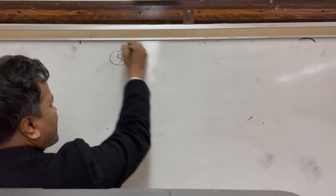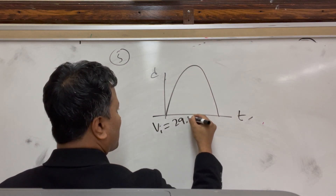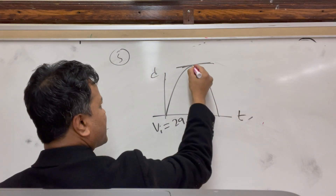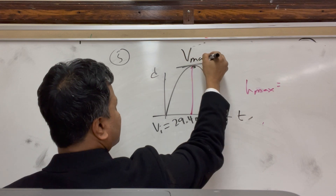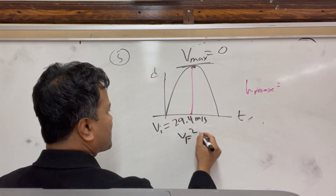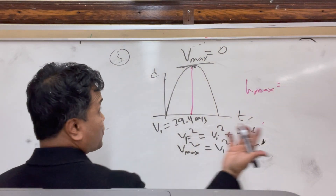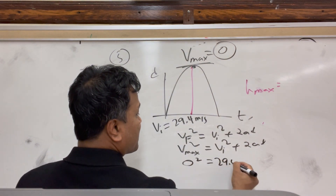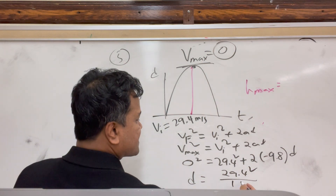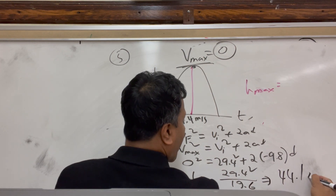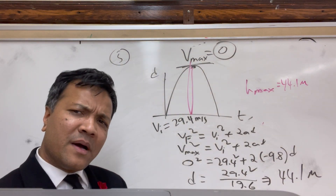Problem five: you throw a ball with initial velocity 29.4 meters per second upward. Find the max height. At max height, velocity equals zero. Using VF² = VI² + 2aD: zero squared equals 29.4 squared plus 2 times negative 9.8 times D. Solving, D equals 29.4 squared divided by 19.6, which gives 44.1 meters — that is the max height.